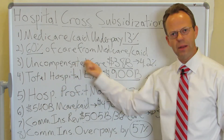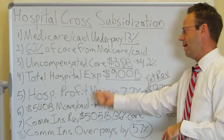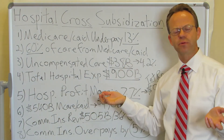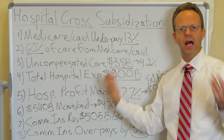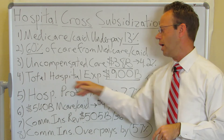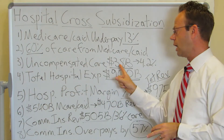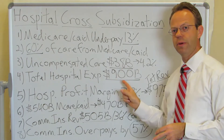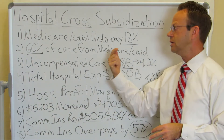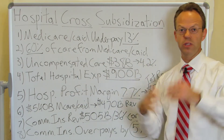There's also just non-payment. There are a lot of patients that come in that just don't pay at all. That's uncompensated care, and that totaled $38 billion. Now, to figure that out as a percentage, we need to know total hospital expense. That's reported by the American Hospital Association as $900 billion. So uncompensated care is $38 billion divided by $900 billion, which gets you 4.2%. The hospital gets 60% of their business from Medicare and Medicaid and 4.2% from people that just don't pay at all.